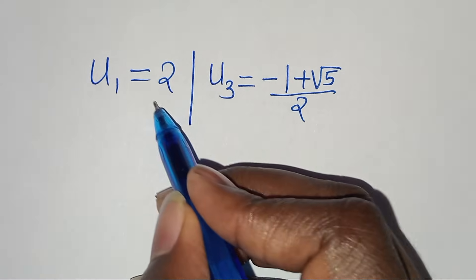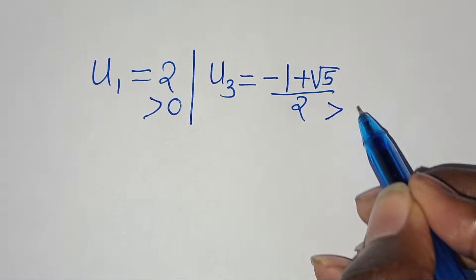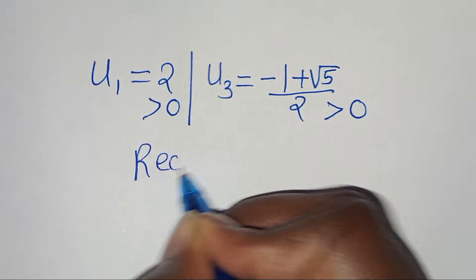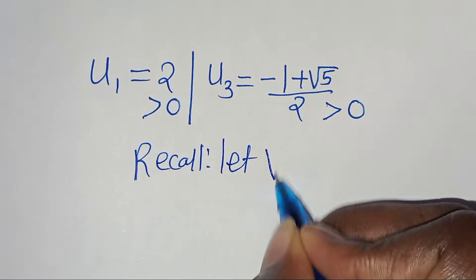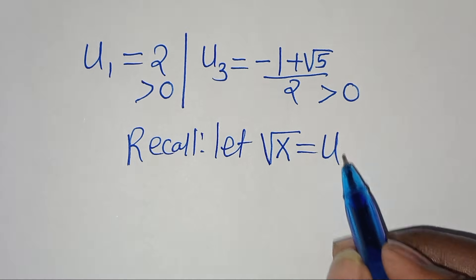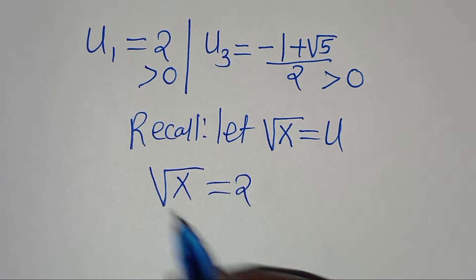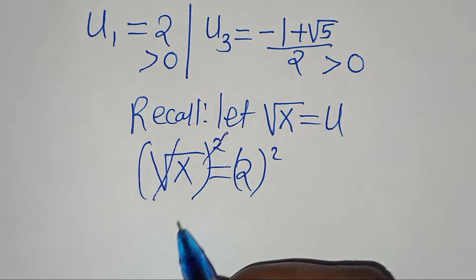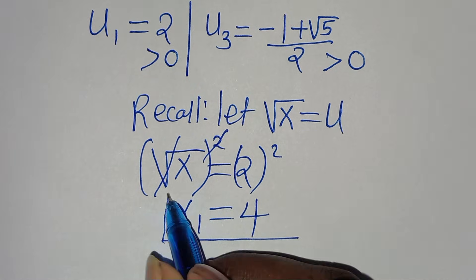Since u₁ equals 2, which is greater than 0, and u₃ equals (minus 1 plus √5) over 2, which is also greater than 0, we can proceed to solve for x. Recalling that √x = u, substituting u₁ which is 2 gives √x = 2. Squaring both sides, x₁ equals 2 squared, which is equal to 4. So this is the first solution for x.